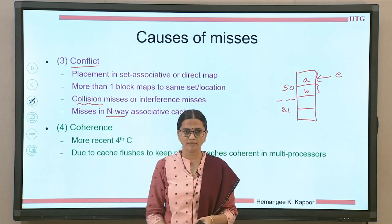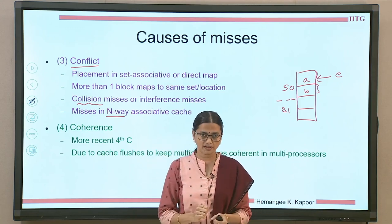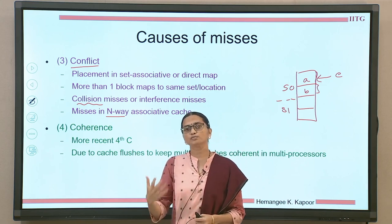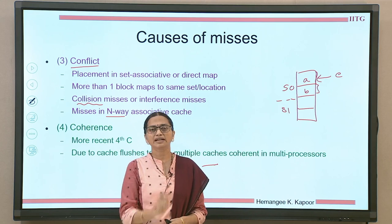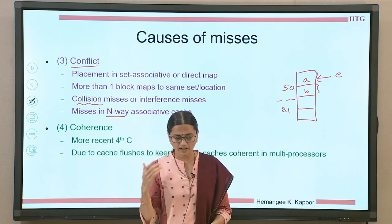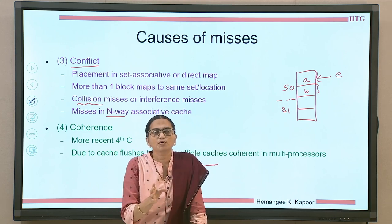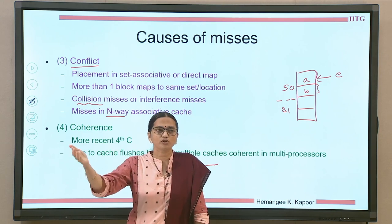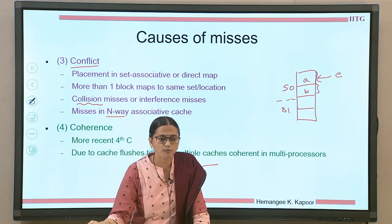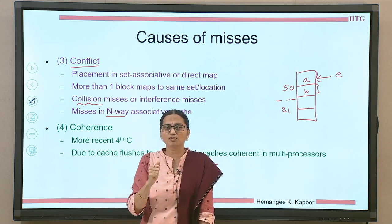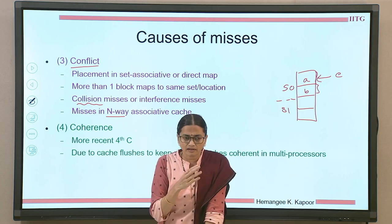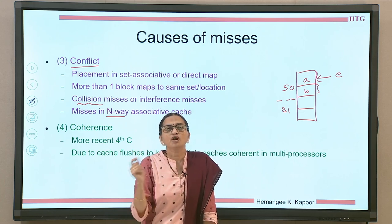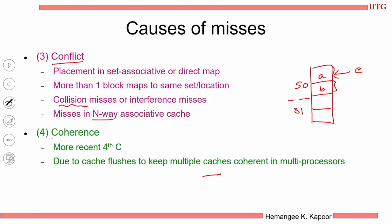Recently, a fourth C has come into picture — coherence misses. We are going to encounter this more and more because these happen due to multiple processors running multi-threaded shared programs. When programs share data, a program would have cached a data item in its local cache and another program wants to access the same data item. When the other process or thread wants this data item, it has to be removed from one cache and given to the other, causing more misses due to this coherence maintenance issue. The coherence miss occurs because multiple caches need to be kept coherent in a multiprocessor environment.